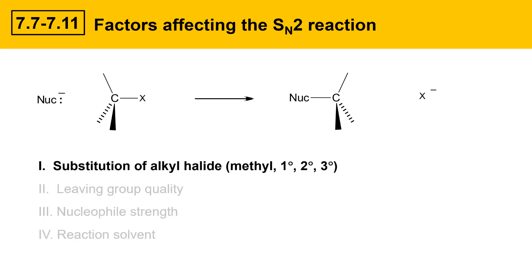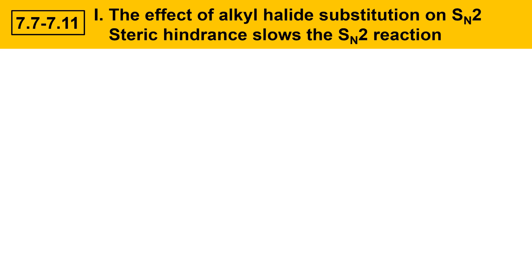In this video, we're going to cover substitution of the alkyl halide and the effect that plays in the SN2 reaction. The most important thing is that steric hindrance slows the SN2 reaction — that's the big take-home message.